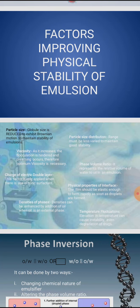Today, we will discuss the various factors which improve the physical stability of an emulsion. We already know the two main mechanisms which are very important for stability of an emulsion: Brownian movement and sedimentation, that is Stokes' law. Some factors are there which can improve the stability of an emulsion, and we will discuss about them one by one.